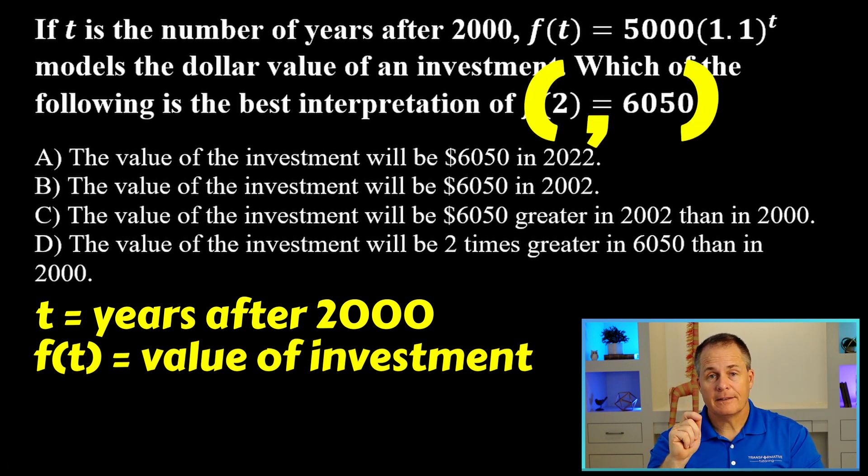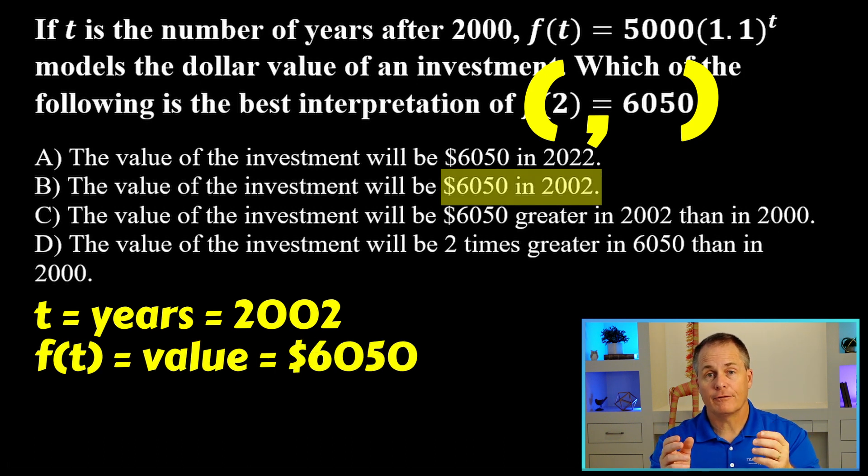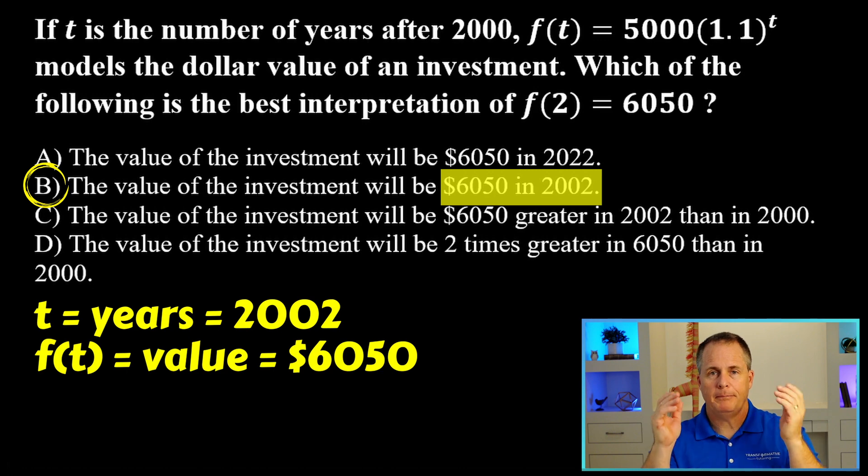The two is a value for what? T or f(t)? The time or the value? Two is a value for t. So the years are going to be the year 2002. And then 6050 is the value for f(t). So the answer is B.